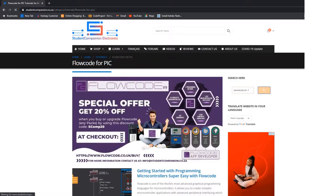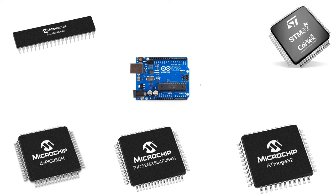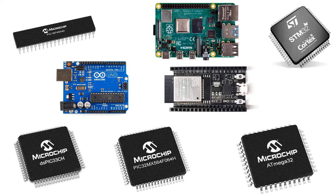If this is the first video you've watched on this channel, welcome to Student Companion Electronics. We provide embedded programming tutorials for Absolute Beginners on various hardware platforms like 8-bit, 16-bit or 32-bit PIC microcontrollers, AVR, ARM, Arduino, Raspberry Pi or ESP32. To learn more or download the source code used in our videos, check out the link to our website in the description. If you have questions or suggestions for future tutorials, please let us know in the comments below or in the forum on our website.